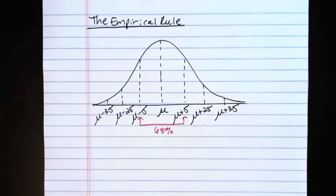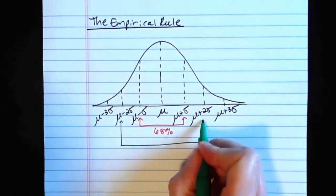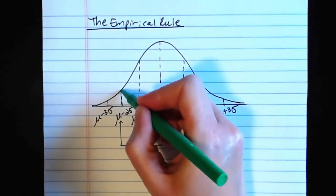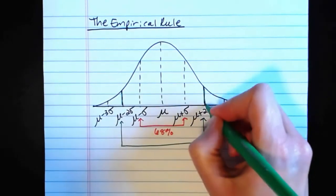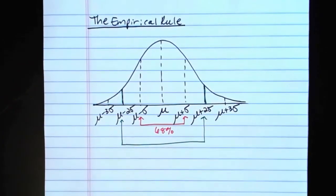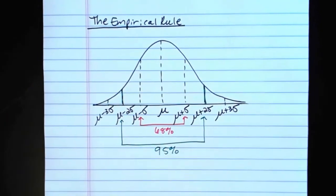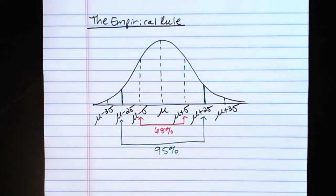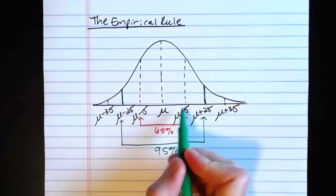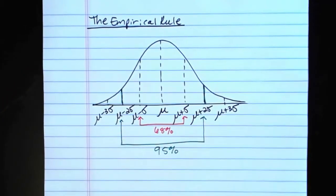If we go out to two standard deviations on either side of the mean, between those endpoints, we can see we really do have the vast majority of the data. There is very little data out in these tails on either side. That amounts to approximately 95% by the empirical rule — so 68% within one standard deviation, 95% within two.